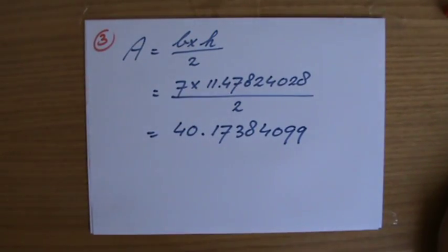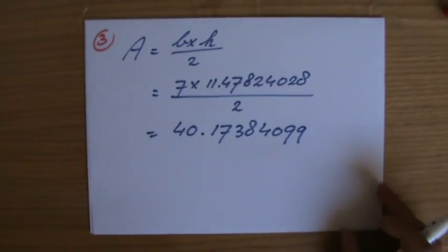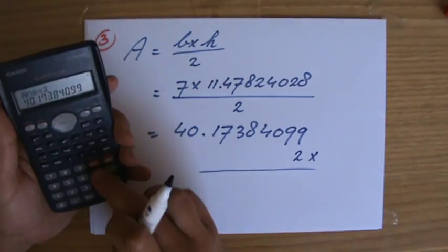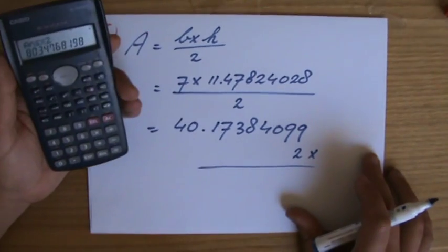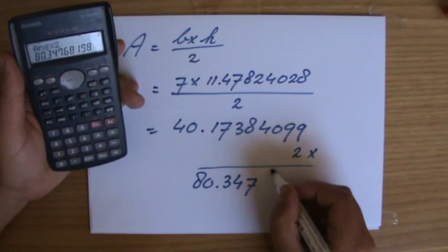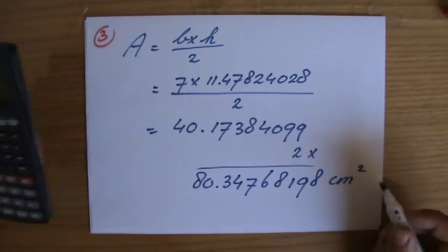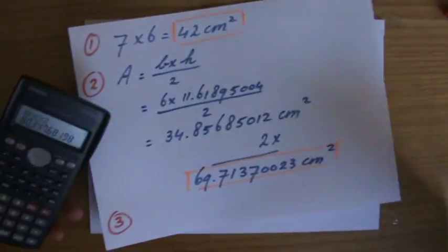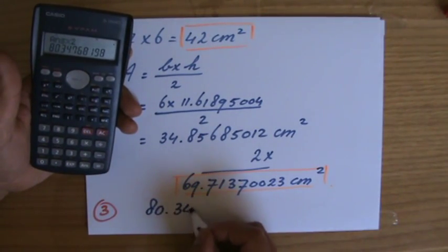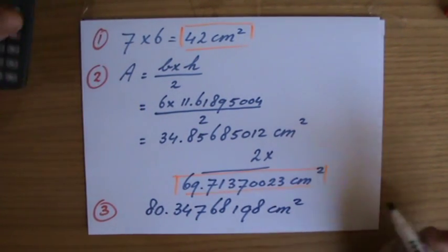That's the area of one triangle, but I have two of them. So what do I do with that number? I multiply that by 2, and then I'll have the area of both. So, that number times 2, 80.34768198 centimeters squared. Alright, I'm going to write the number now here. So, what do we have? We have 80.34768198 centimeters squared. Excellent.